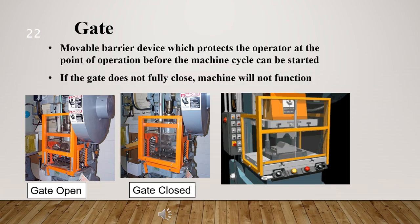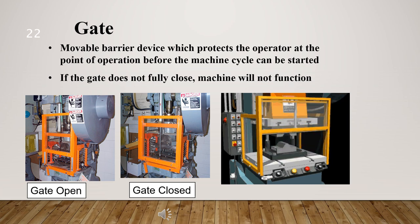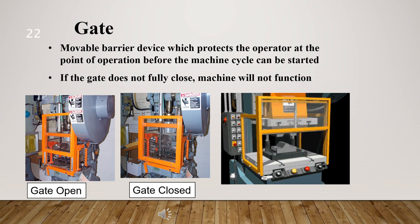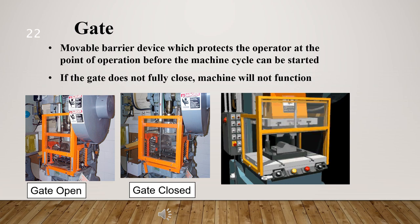In this part, we will learn about one method of machine safeguarding — the gate. The gate is a movable barrier that protects the operator at the point of operation before the machine cycle can be started. Gates are, in many instances, designed to be operated with each machine cycle.